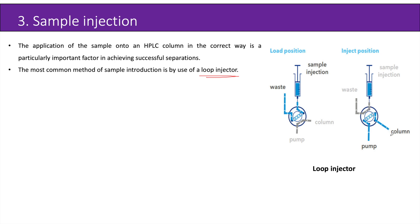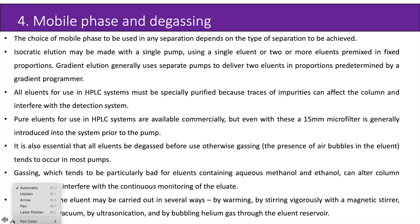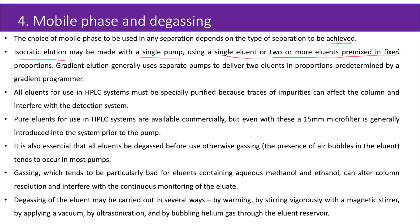Next is the mobile phase and degassing. The choice of mobile phase depends on the type of separation to be achieved. Isocratic elution may be made with a single pump using a single eluent or two or more eluents premixed in fixed proportions. Gradient elution generally uses separate pumps to deliver two eluents in proportions determined by a gradient programmer. All eluents for use in HPLC systems must be specially purified because traces of impurities can affect the column and interfere with the detection system. Even with commercially pure eluents, a 15 mm microfilter is generally introduced into the system prior to the pump.